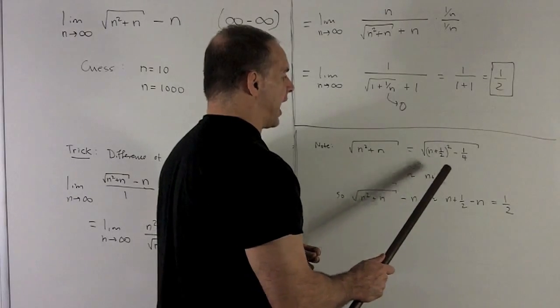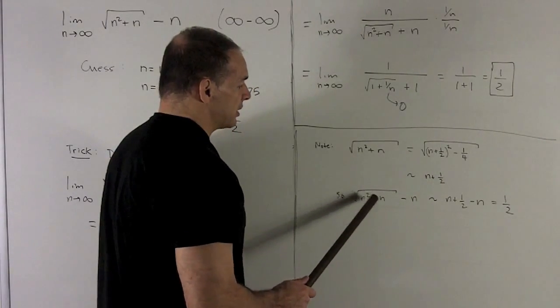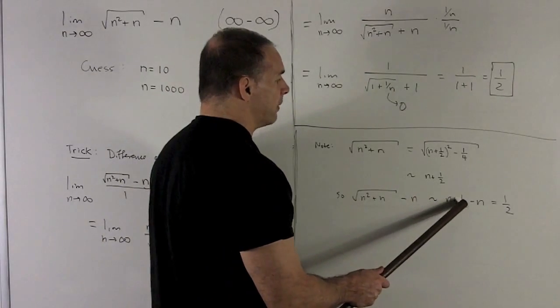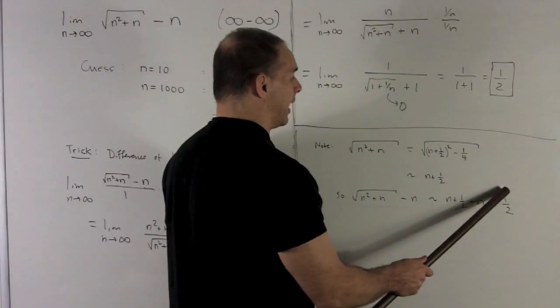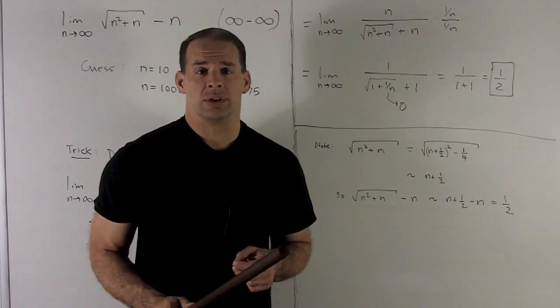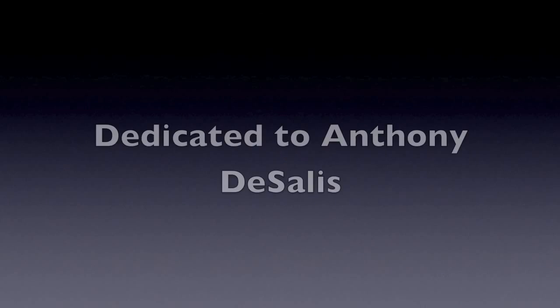And that's just going to reduce to n plus a half. Now, when we're looking at really large n, this expression that we're interested in is going to look like n plus a half minus n or a half. So two different ways to look at this limit here.